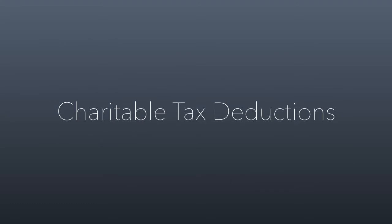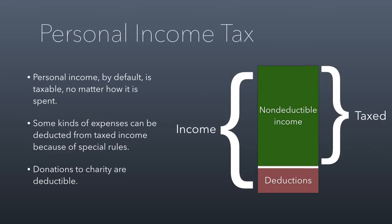Let's talk about the charitable tax deduction. As most of you know, when you give money to charity, you can deduct it from your taxes. With corporations, you're only taxed on your profits — any money you spend on business expenses is tax-free. That's not how it works as a private individual. With individual income taxes, you make money and by default you pay taxes on any of the money you have. It doesn't matter that you spend it. All of your income is taxable by default.